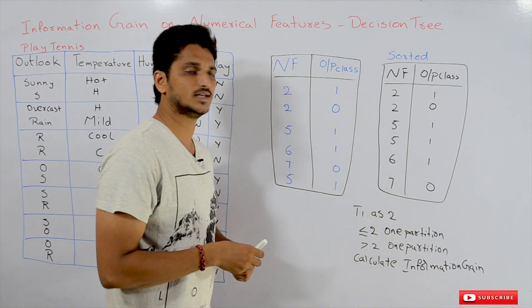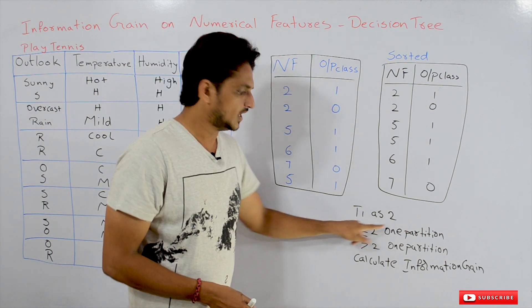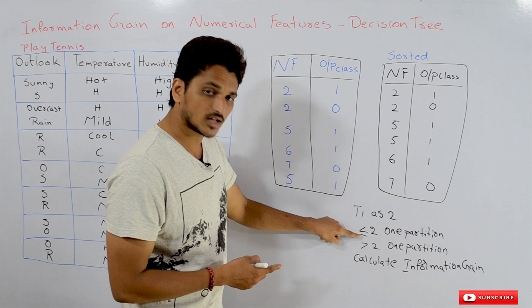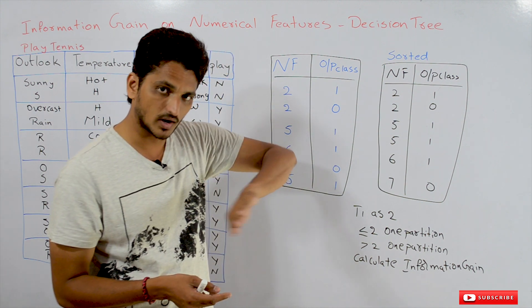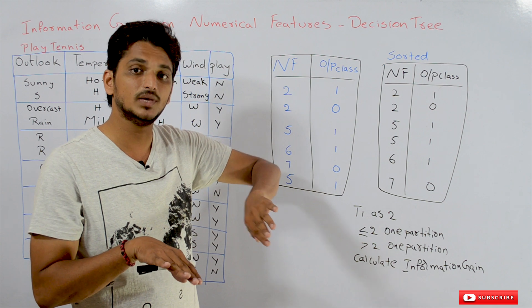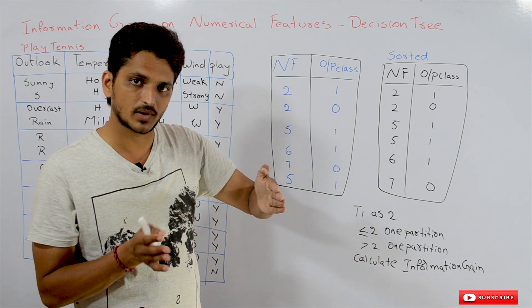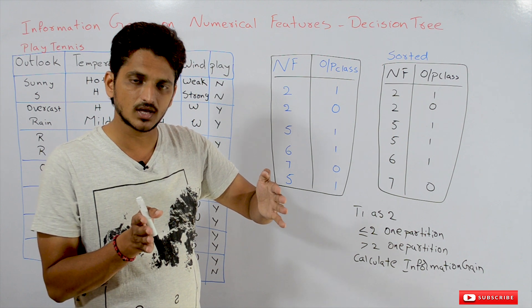What we do here is take the first value. What is the first value? 2. So t1 is 2. The values that are less than or equal to 2 are considered as one partition and greater than 2 is considered as another partition. So here we have two partitions: values less than or equal to 2, and values greater than 2.